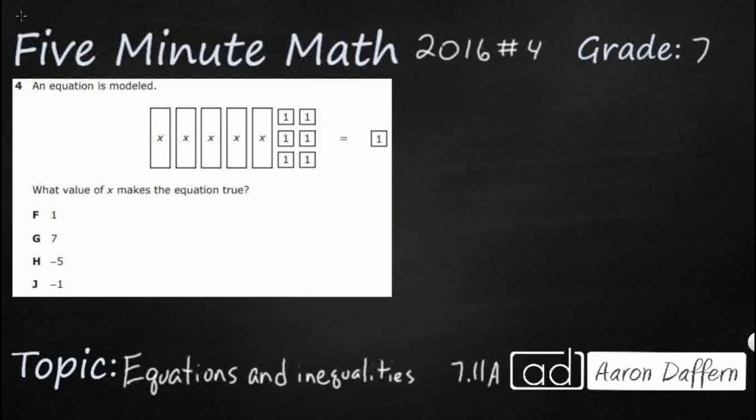So we have this equation that's modeled, but we just see some bars with x's and some little squares with 1's, and then we have an equal sign — and it almost doesn't look like an equation. We need to solve for x. You see all of these bars and boxes; really all we're modeling here is addition. It's very difficult to model multiplication or division, but we're going to find that this actually does model multiplication a little bit.